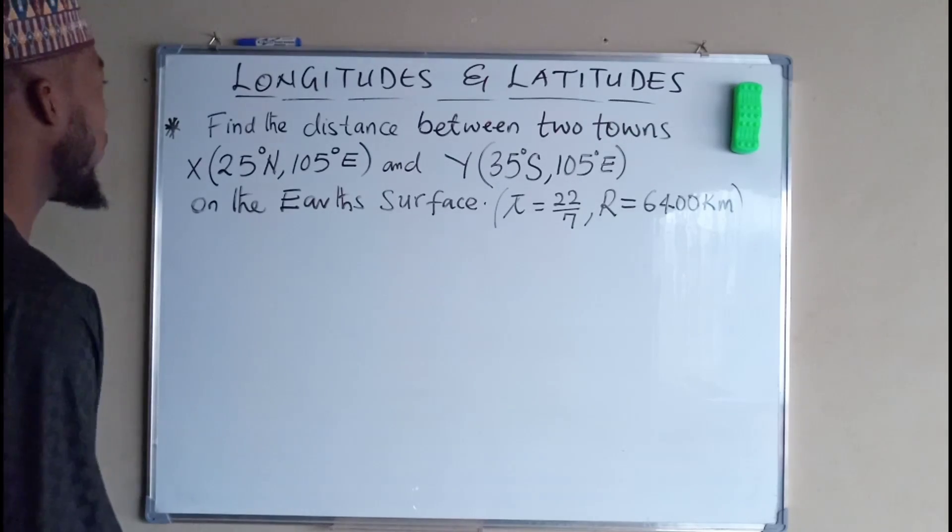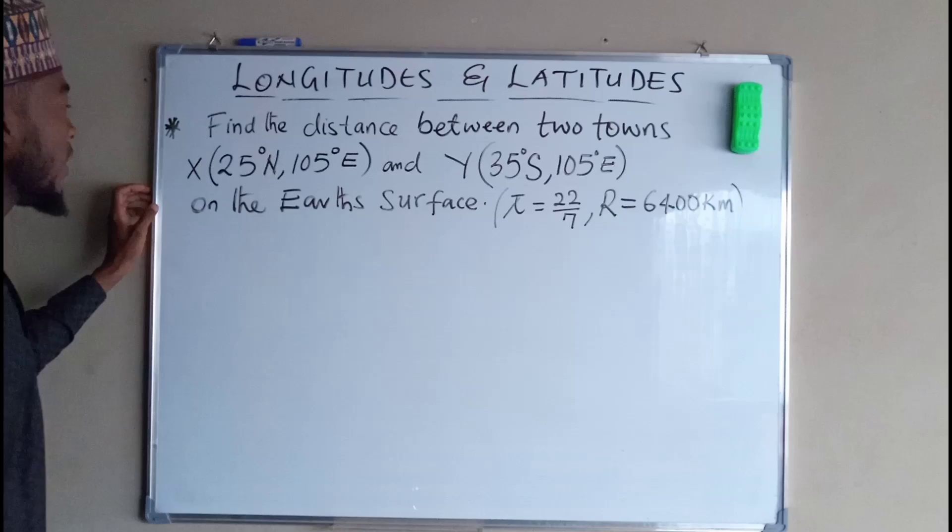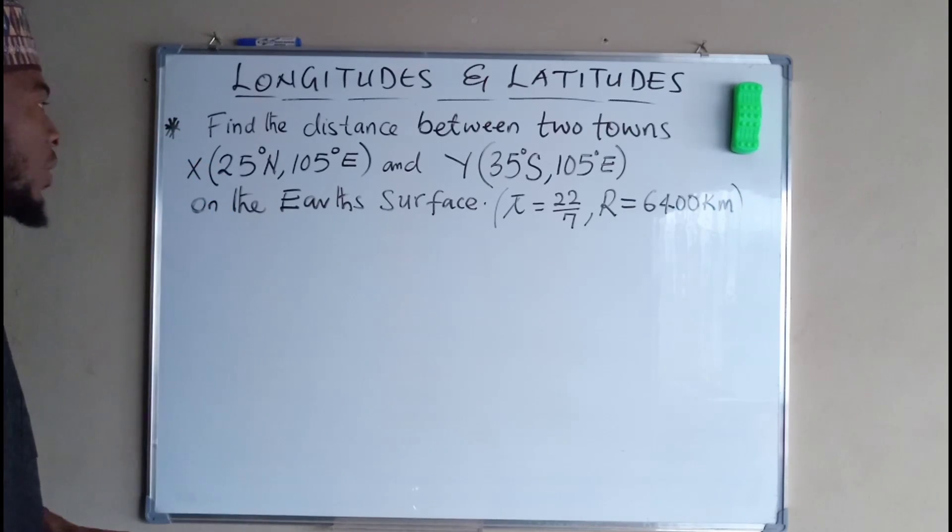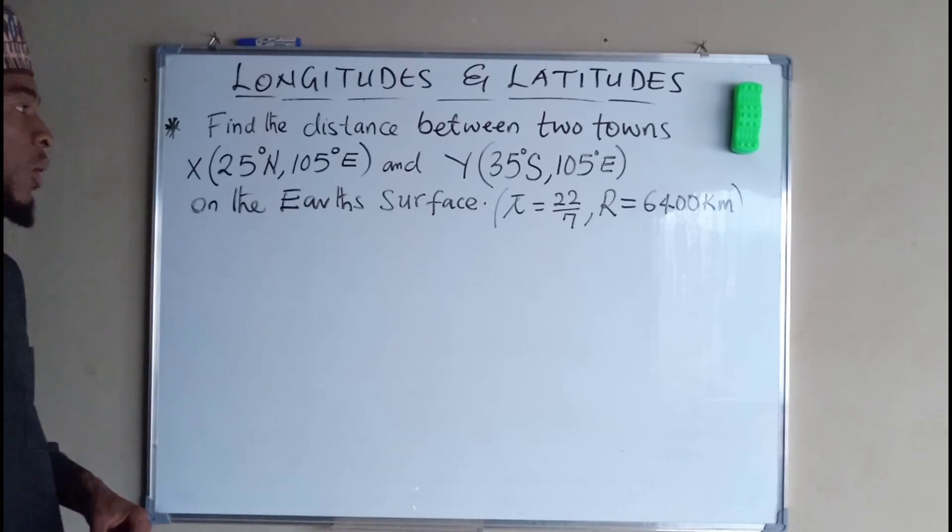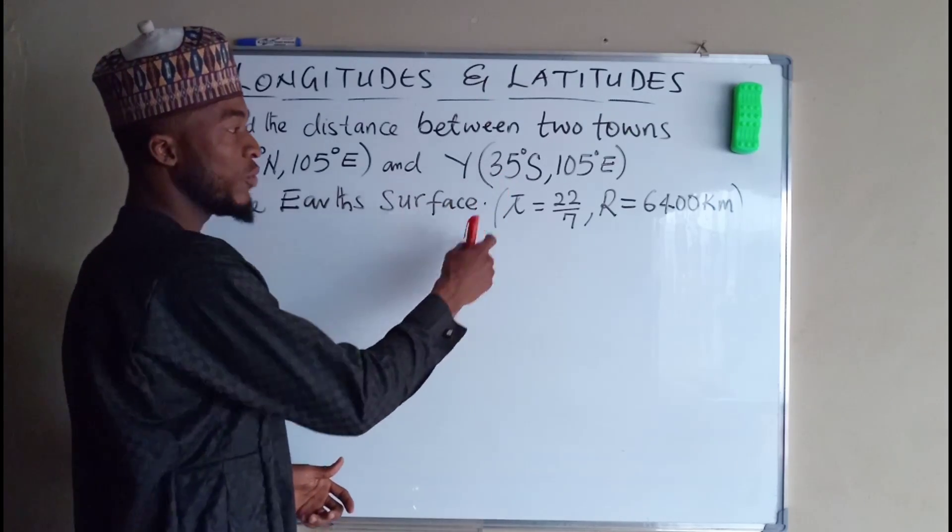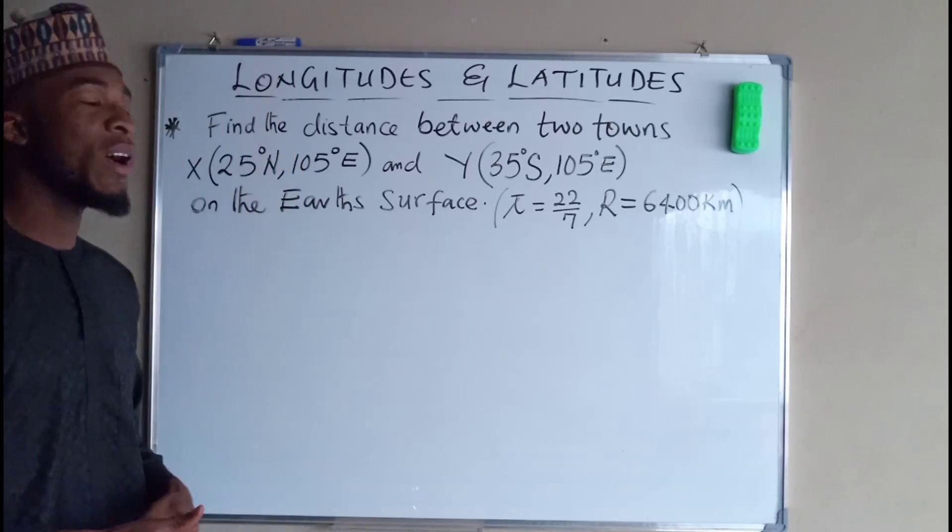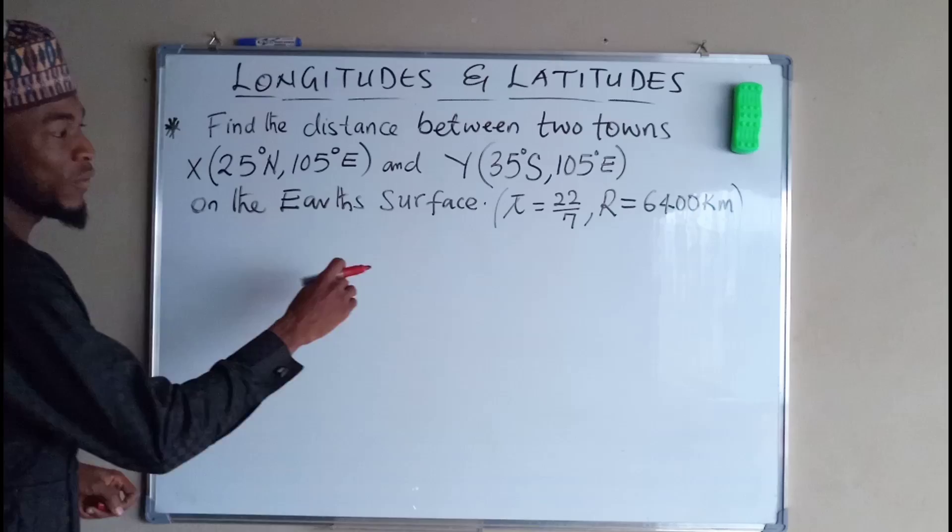The question says find the distance between two towns X and Y such that town X is on the latitude 25 degrees north and the longitude of 105 degrees east, and the town Y is on the latitude 35 degrees south and 105 degrees east longitude on the earth's surface.